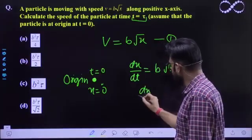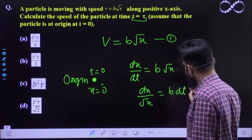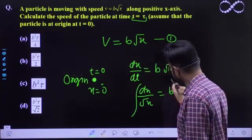So dx would be equal to root x b dt. Again integrate it. Integrate karenge hum isko.